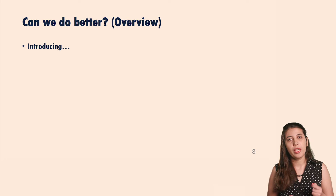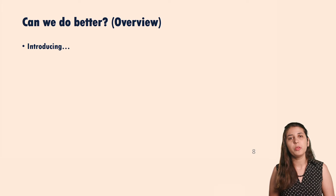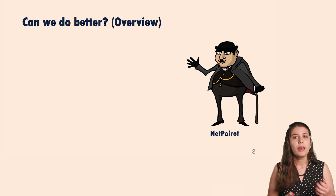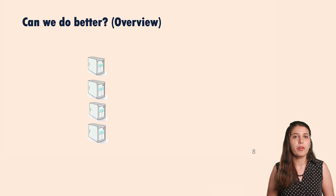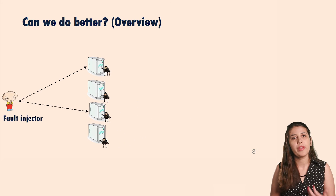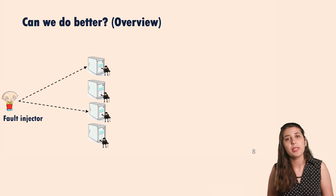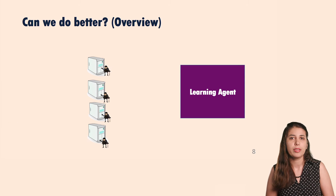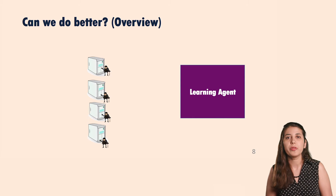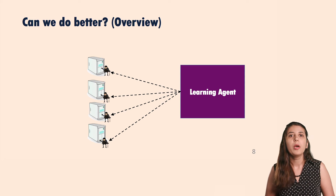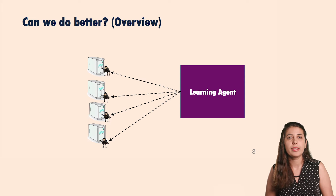So we asked ourselves: can we do better? We developed a tool called NetPero, which we deploy on all of our VMs and it captures a certain set of information from those VMs. We also have a fault injector that randomly injects failures into the communication path of a subset of these VMs, and we collect that information and send it to a learning agent. That learning agent then distributes diagnostic functions to all instantiations of NetPero, which can utilize that to identify the cause of failure when a failure happens.